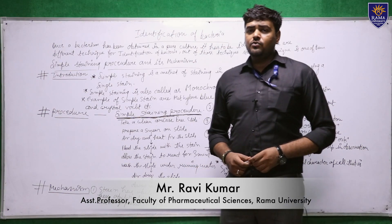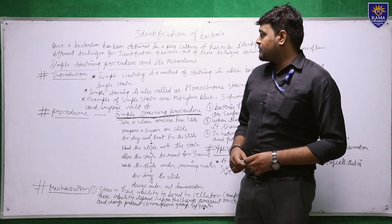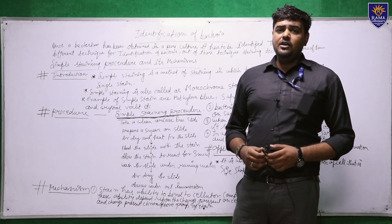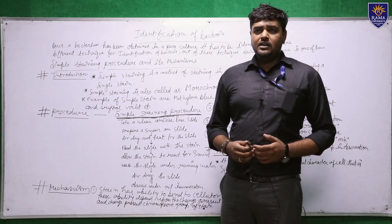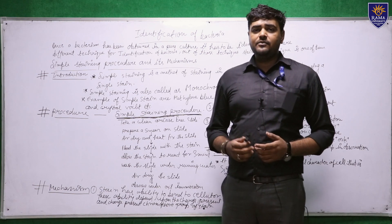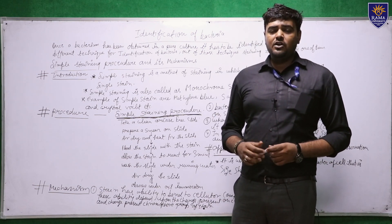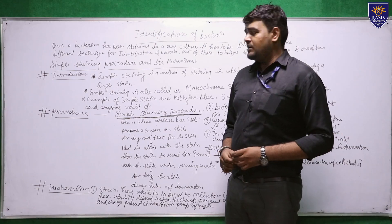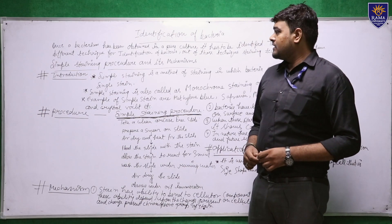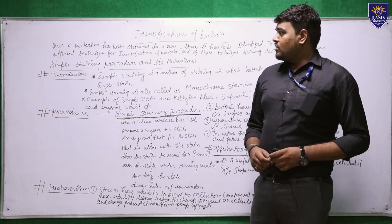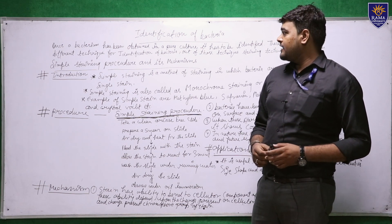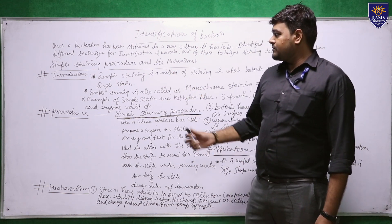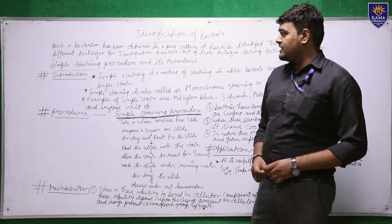Today in this lecture, we will see about the identification of bacteria using simple staining procedure and its mechanism. There are several techniques for the identification of bacteria. We usually determine the type of bacteria using the gram staining technique, but for identifying whether bacteria has grown under certain conditions, we use the simple staining technique. Once a bacterium has been obtained in a pure culture, it has to be identified, and one of the techniques used for this is simple staining.